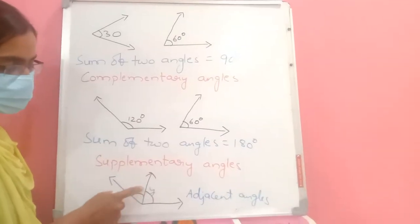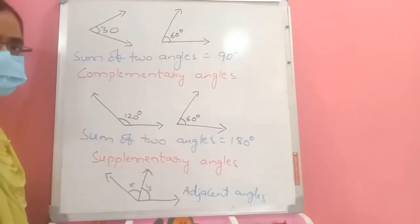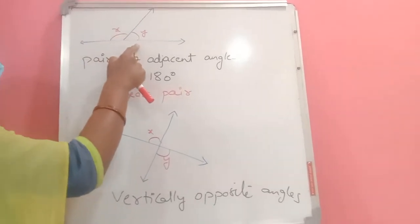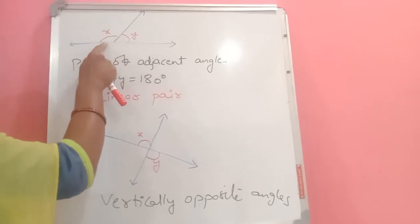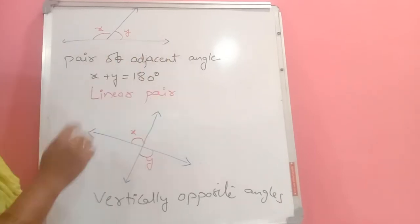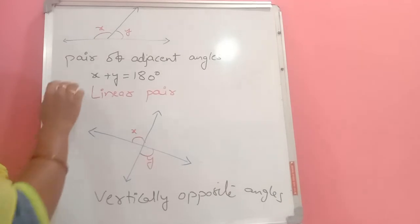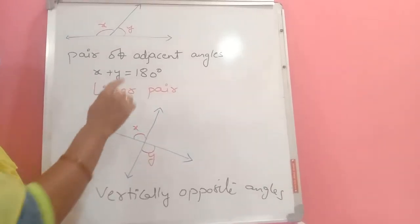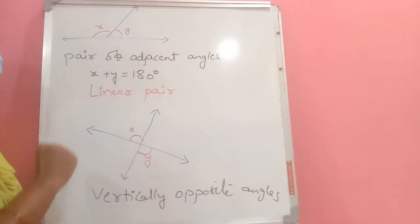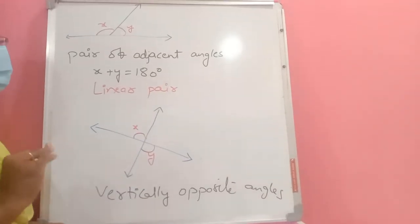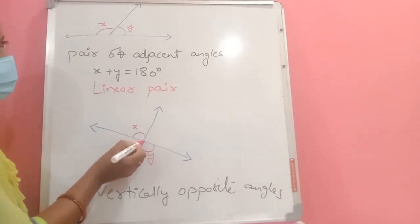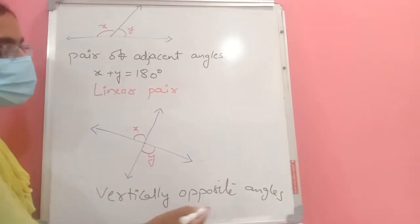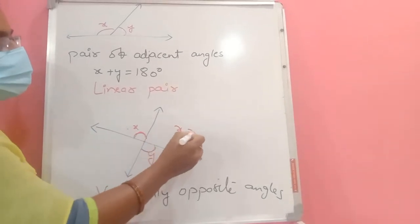Two angles that are next to each other are called adjacent angles. If you have a straight line and two adjacent angles on it, their sum is 180 degrees because the angle on a straight line is always 180 degrees. Adjacent angles whose sum is 180 degrees are called a linear pair. When two lines intersect, the angles opposite to each other at the point of intersection are called vertically opposite angles, and they are always equal.